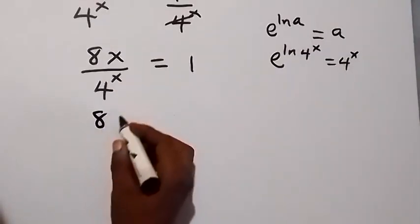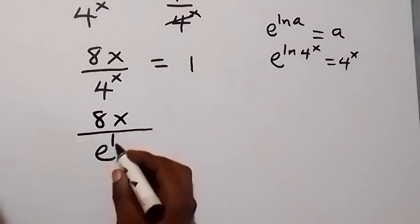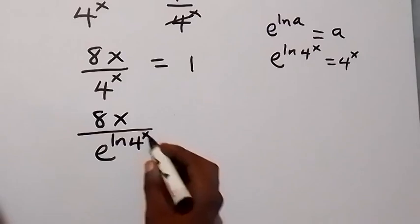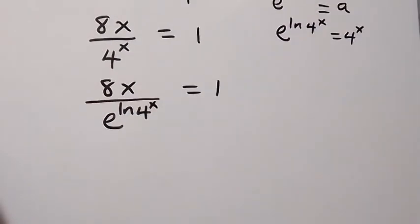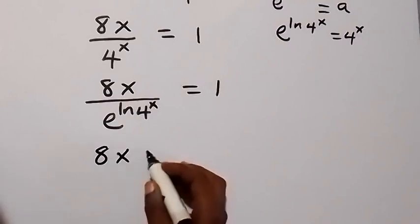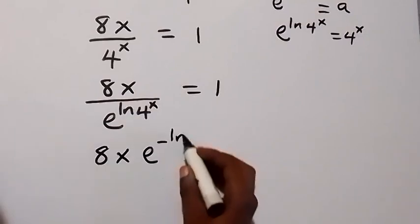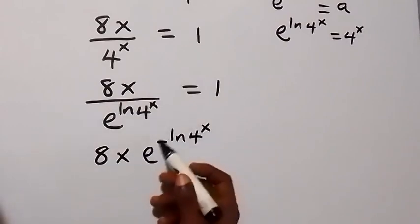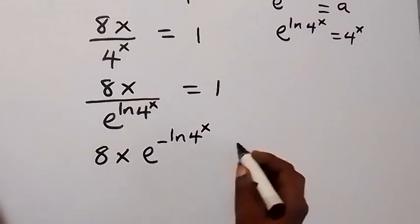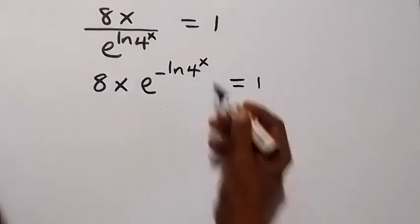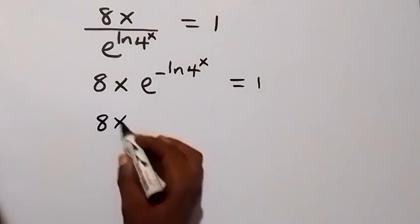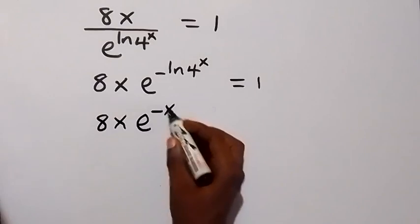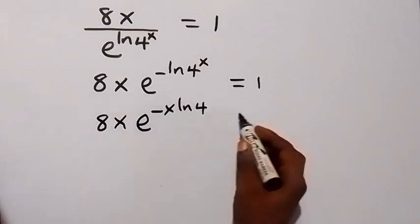So let's write this: from 8x over exponent of ln 4 raised to power x, equals 1. From here, we can write this as 8x times exponent of ln 4 raised to power x, because raising to a negative power is the same as 1 over. Applying the power law of logarithms, x comes to the front, so we have 8x times exponent of minus x ln 4, which equals 1.